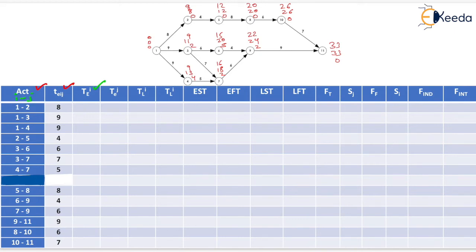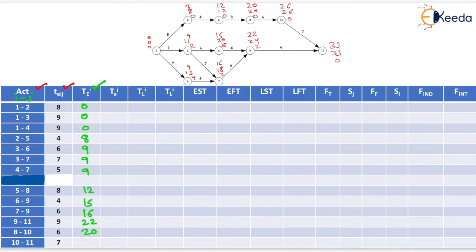For event 1, TEI = 0 (filled in three rows). For event 2, TEI = 8. For event 3, TEI = 9. For event 4, TEI = 9. For event 5, TEI = 12. For event 6, TEI = 15. For event 7, TEI = 16. For event 9, TEI = 22. For event 8, TEI = 20. For event 10, TEI = 26. We have now filled the TEI values.